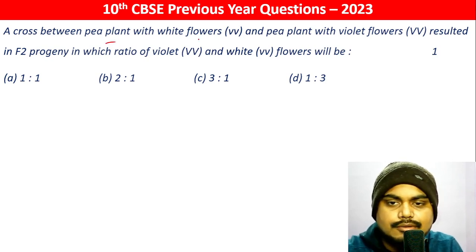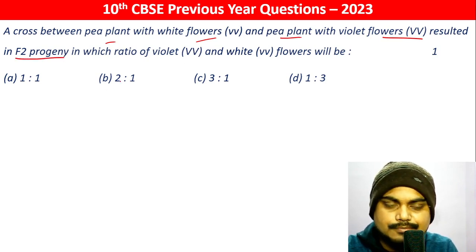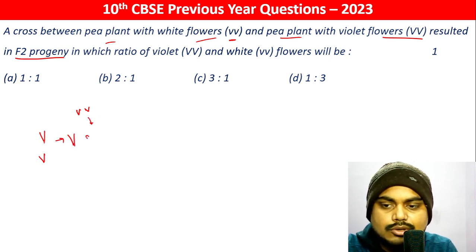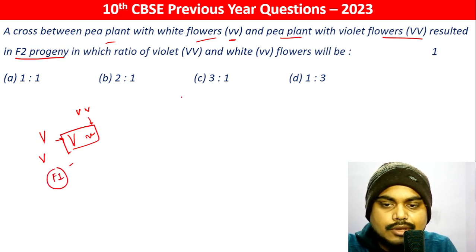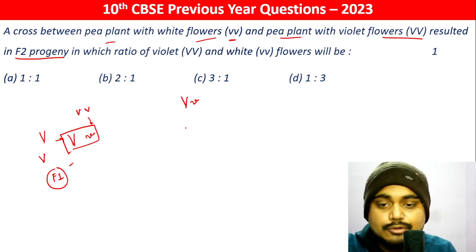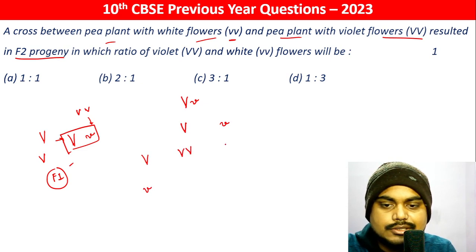A cross between a P plant with white flowers and a P plant with violet flowers resulted in F2 progeny. They are not pure breed, so VV or big V or small V — this gives the big V gamete and this gives the small V gamete. So this is the F1 progeny.